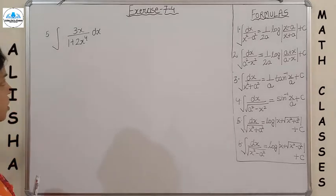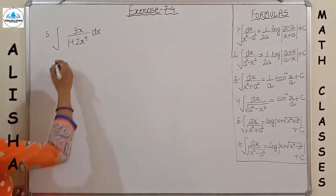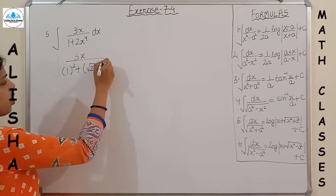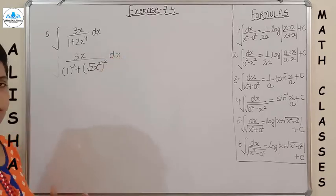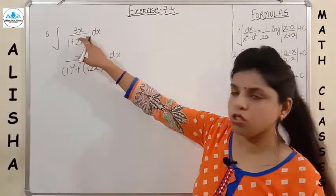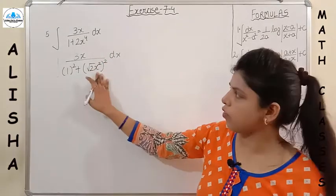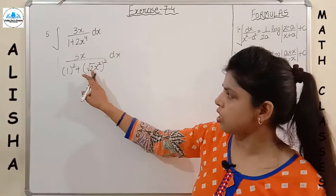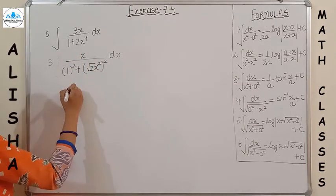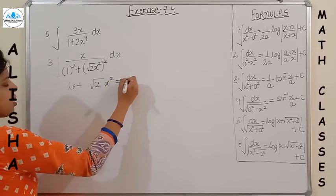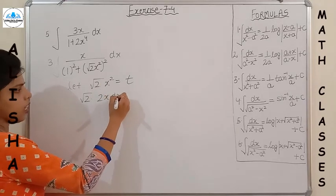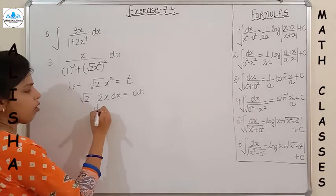Question 5: integration of 3x/(1 + 2x⁴). Make the denominator in the form a² + b²: 2x⁴ = (√2 · x²)². So we can write it as 3x/(1 + (√2 x²)²). Take 3 outside and let √2 x² = t. Differentiating: √2 · 2x dx = dt, so x dx = (1/(2√2)) dt.